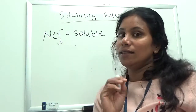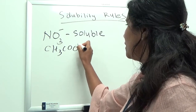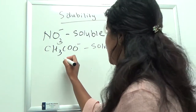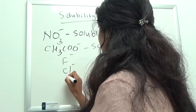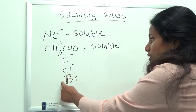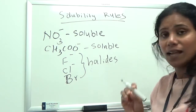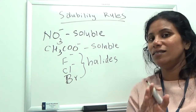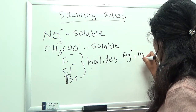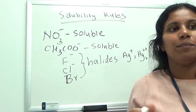Another important soluble anion is acetate (CH3COO⁻). If your compound has acetate, it is again soluble. Also in this group are the halides — fluoride, chloride, and bromide — which are in group 7. Halides are generally soluble, but there are three exceptions: silver (Ag⁺), mercury (Hg2²⁺), and lead (Pb²⁺). Except for silver, mercury, and lead, compounds with halides are soluble.